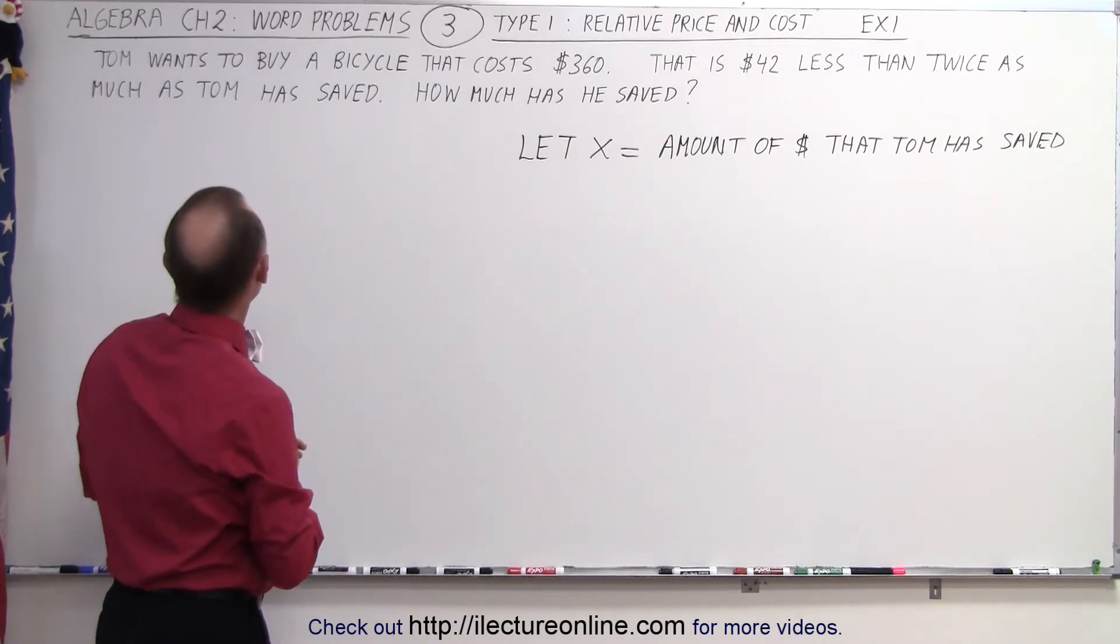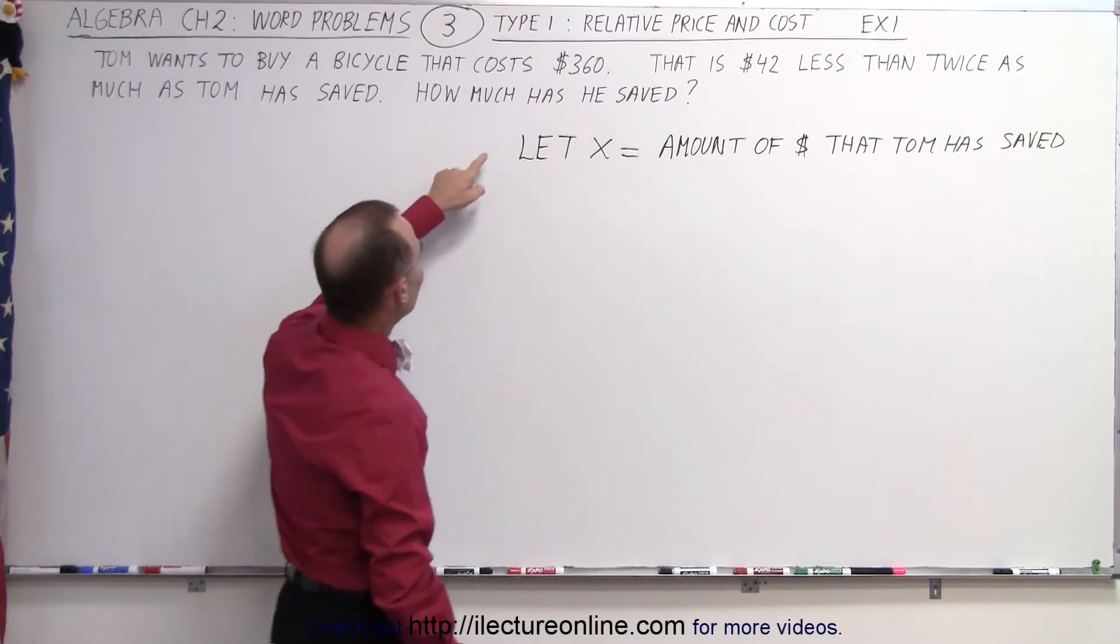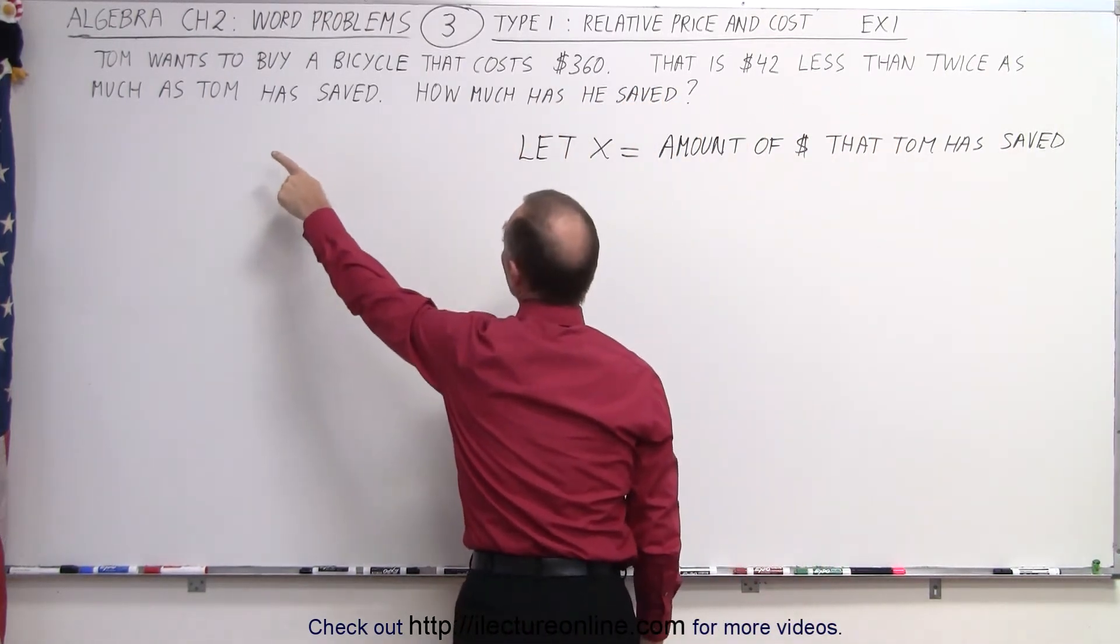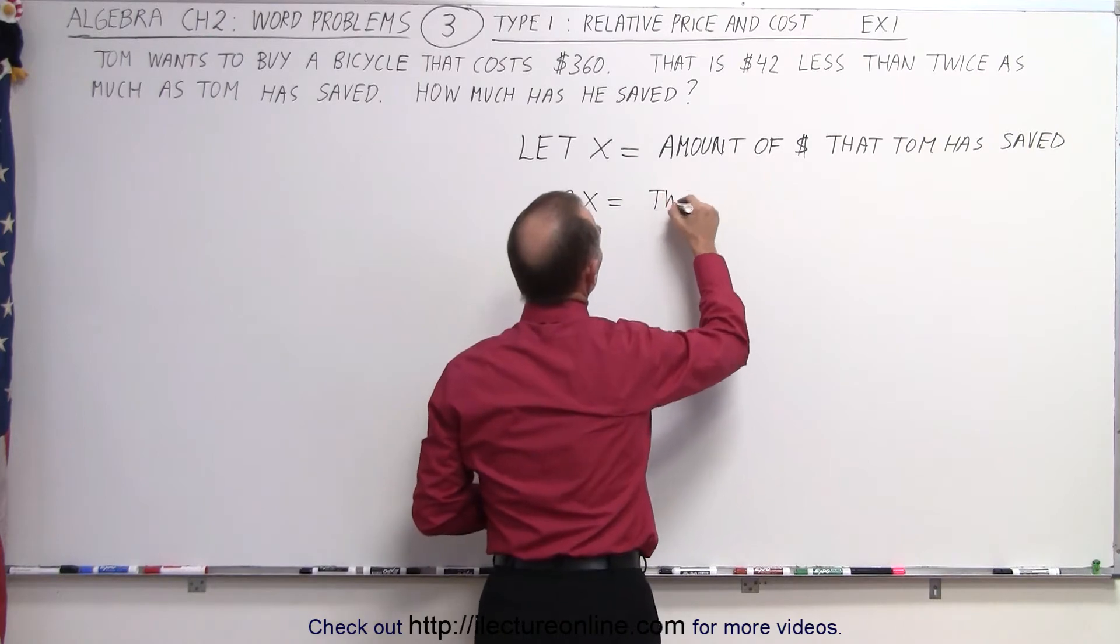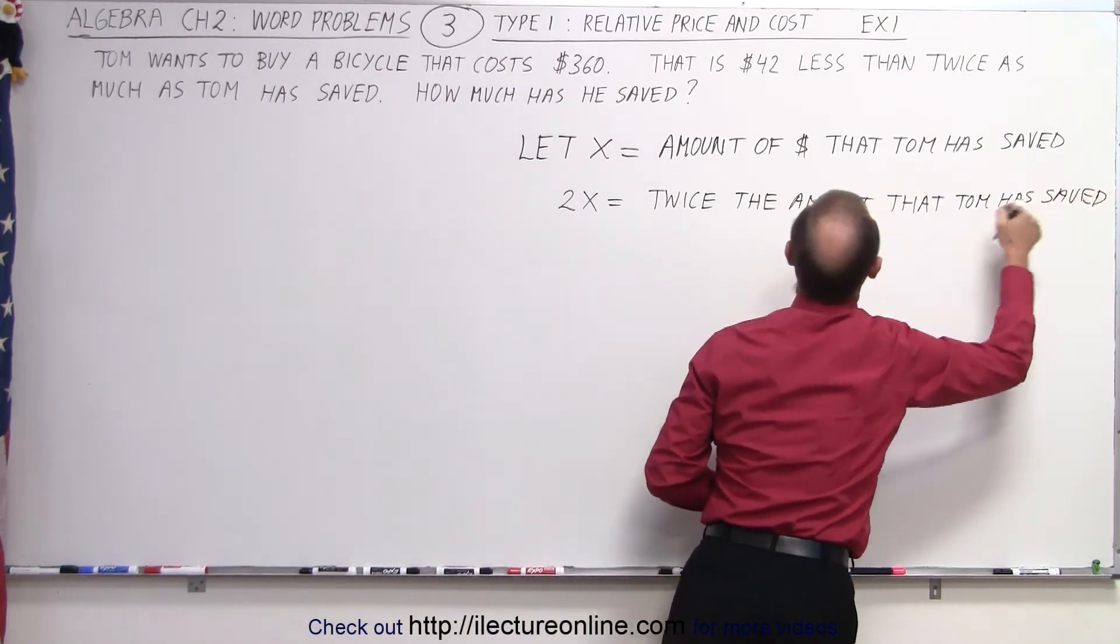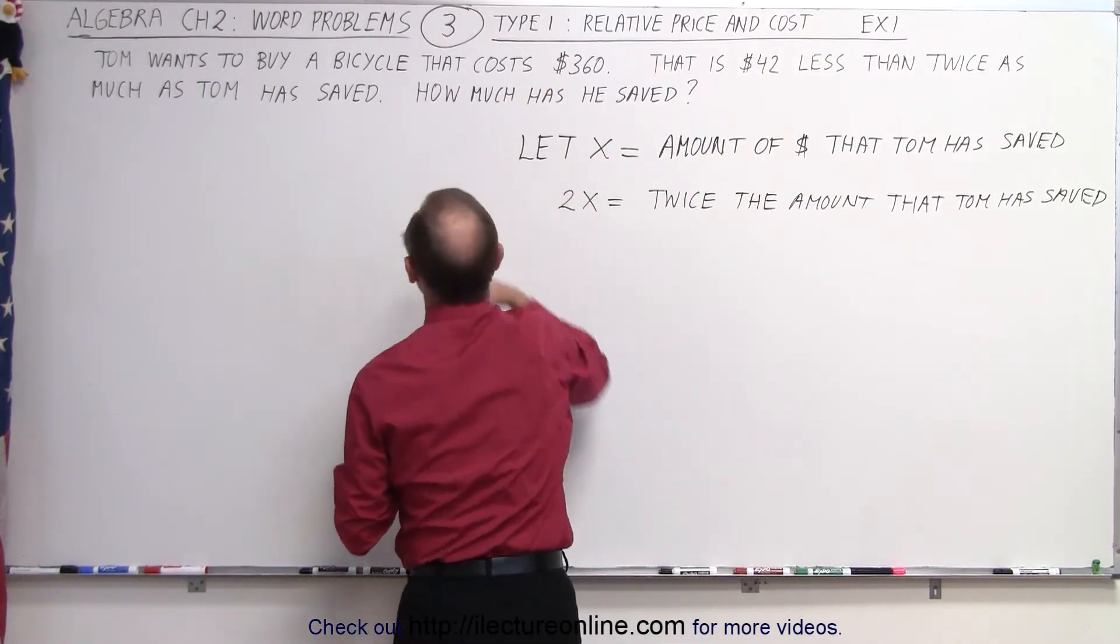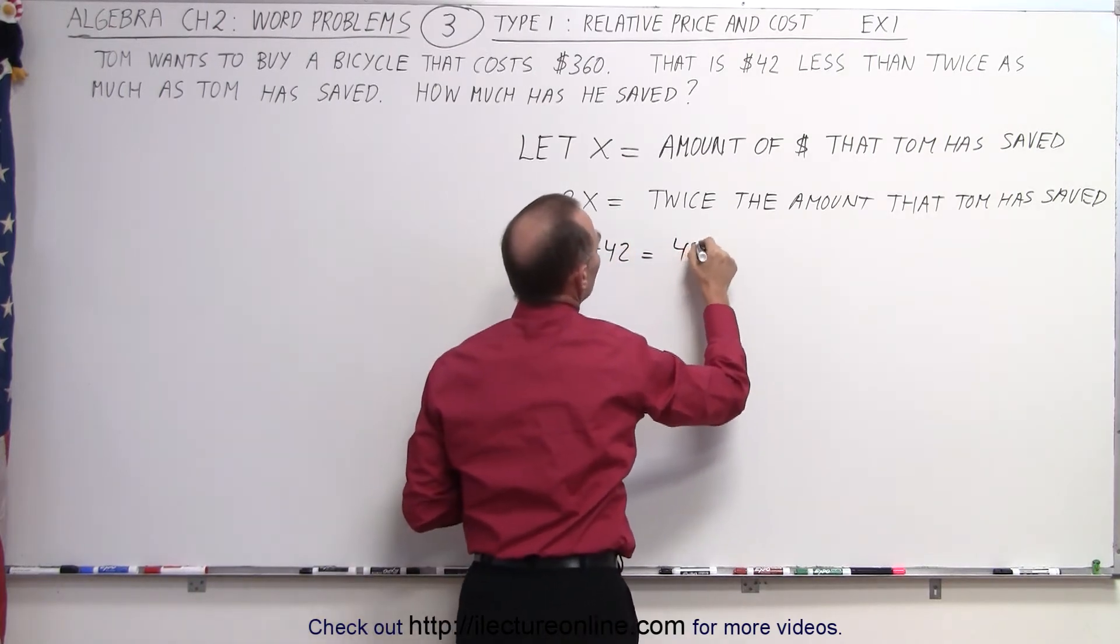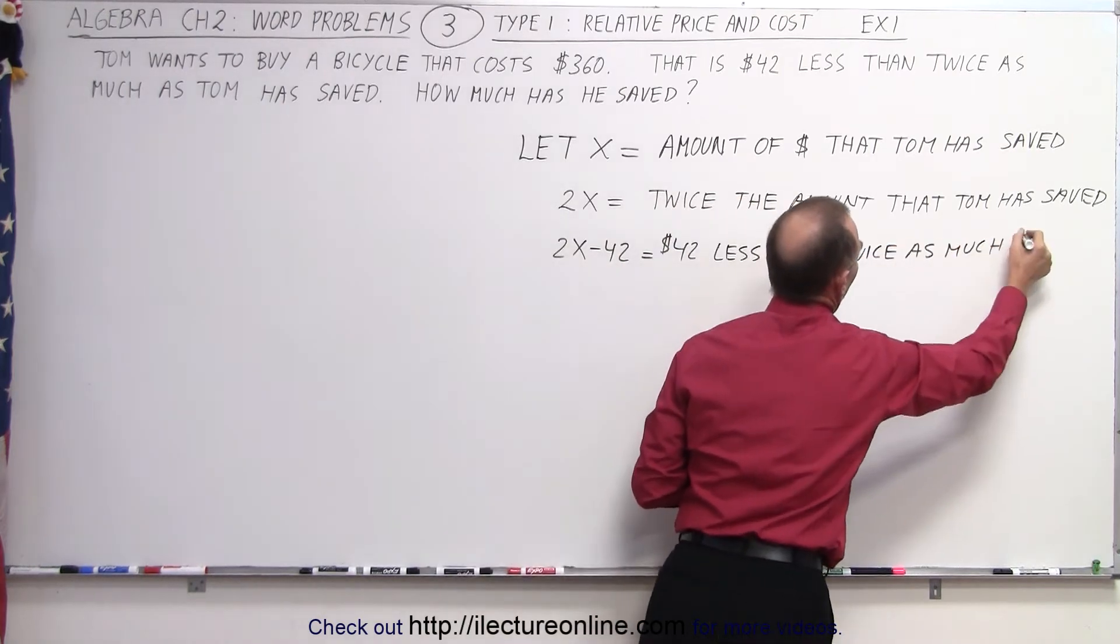Now, we need to read the sentence and let's see here. We need to figure out something relative to the price. It says here that $360 is $42 less than twice as much money as Tom has saved. So, that means that 2X is equal to twice the amount Tom has saved. Now, when we subtract $42 from that, we'll have $42 less than twice as much Tom has saved. So, 2X minus $42 is equal to $42 less than twice as much as Tom has saved.